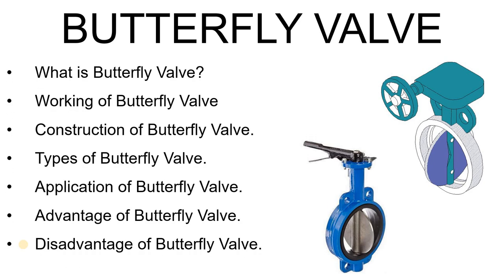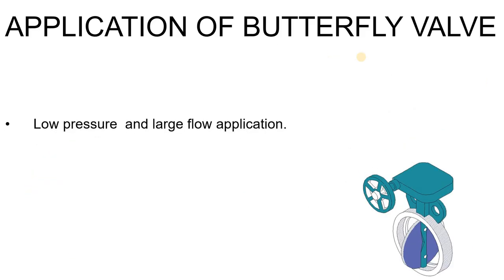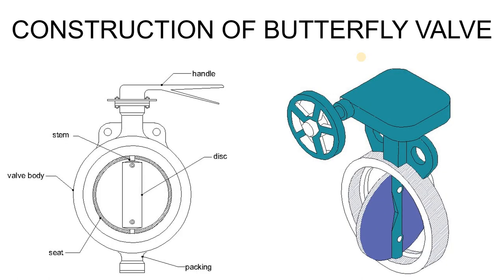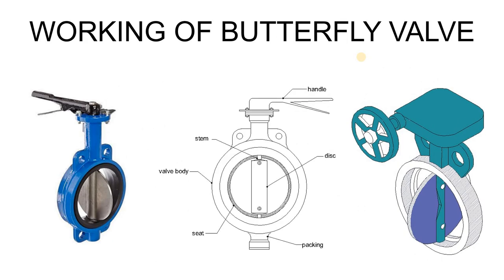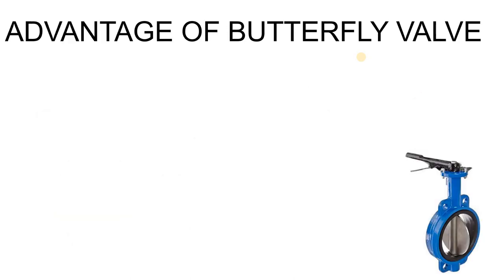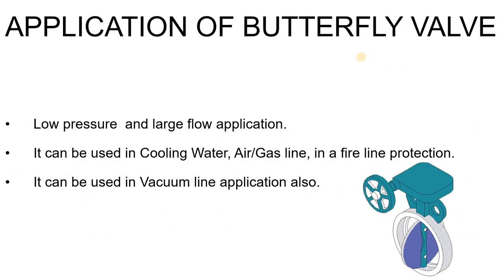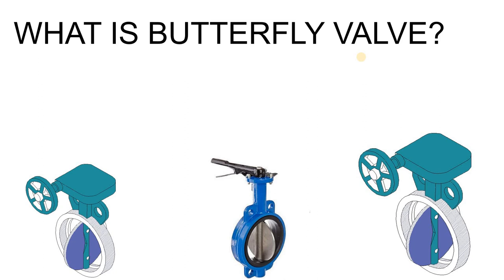Hello, Core Engineering family. In this video we are going to discuss one of the most important valves used in a cooling water line and airflow line — that is the butterfly valve. We will discuss what is a butterfly valve, its applications, advantages, construction and components, working principle, and how it differs from ball, plug, gate, and globe valves, as well as its advantages and disadvantages.